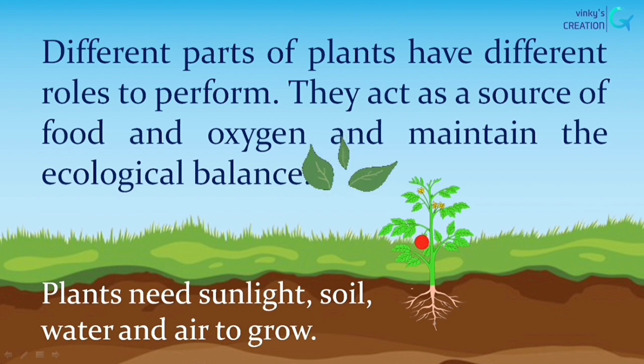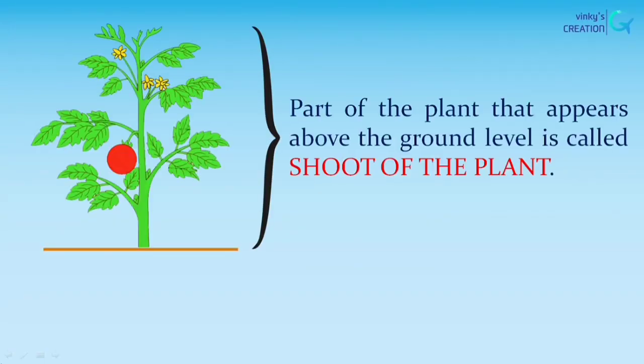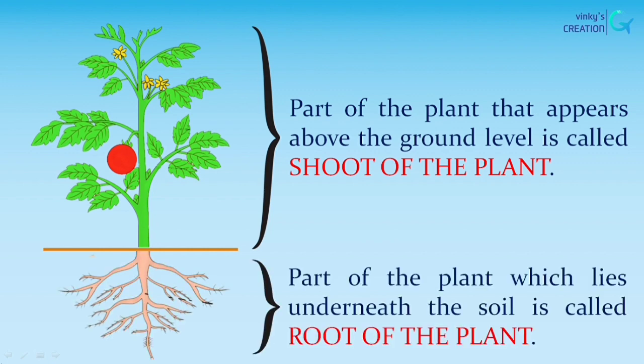Plants need sunlight, soil, water, and air to grow. The part of the plant that appears above the ground level is called the shoot of the plant, while the part which lies underneath the soil is called the root of the plant.